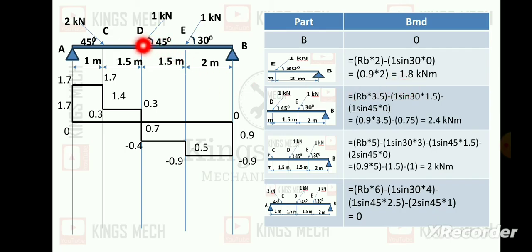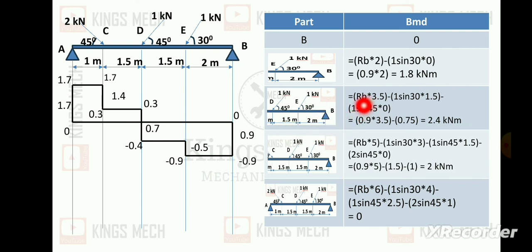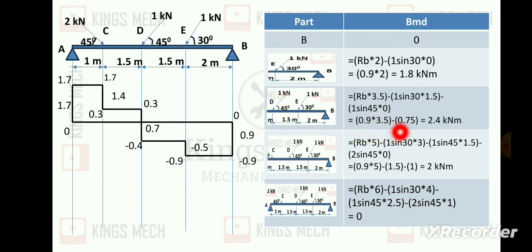At point D: we have 1 kilo newton load and Rb covering distance 1.5 plus 2 = 3.5. So Rb into 3.5, minus 1 sin 30 into covering distance 1.5, minus 1 sin 45 into 0. This gives: 3.5 minus 0.75 minus 1.5, which simplifies to approximately 2.4 kilo newton meter positive.